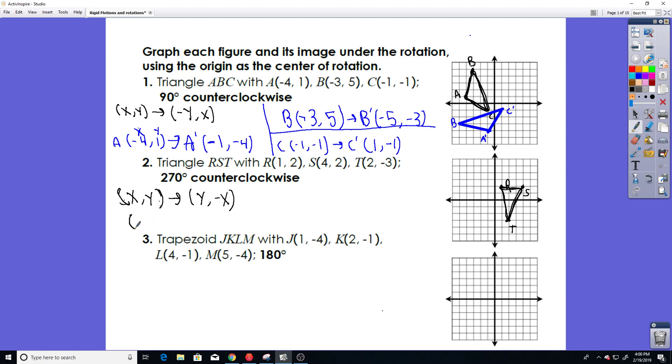So, let's start with R. R is (1, 2). And that's going to be transformed into (2, -1). So, let me do this in red just to make the visual pop out. We're going to go over 2 and down 1. Right there. So, this point right here is R prime. Okay. Now, we're going to do S. S is (4, 2). And we're going to rotate that and it's going to end up as (2, -4). So, we're going to go over 2 to the right and down 4. And that right there is S prime.